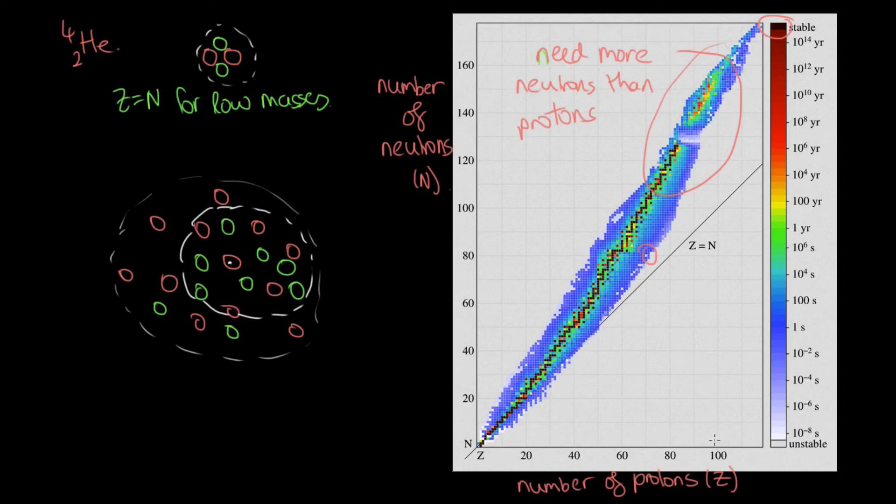So on Earth, we don't actually get anything heavier than uranium, which is 92 and is this one up here. That's because beyond this, their half-lives are so short that all the isotopes with these atomic numbers have decayed because they are unstable.